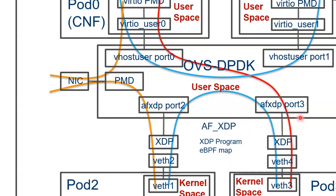OVS also implements a network device type AF_XDP, which can be used to receive and transmit packets using the AF_XDP socket. After receiving packets through the AF_XDP network device, OVS-DPDK matches open flows and executes actions. In this case, traffic is sent to pod 0. OVS-DPDK copies packets into the shared memory of pod 0 and OVS-DPDK, and pod 0 polls packets from that shared memory through the VHOST PMD.